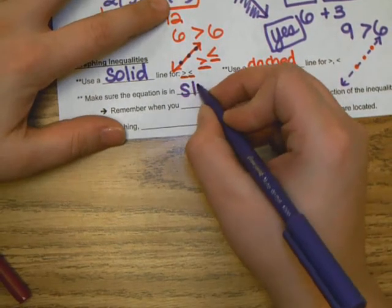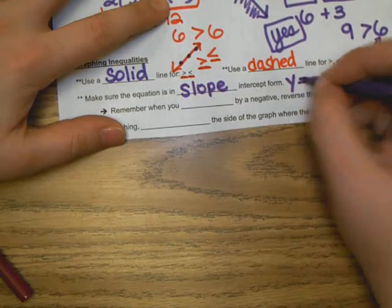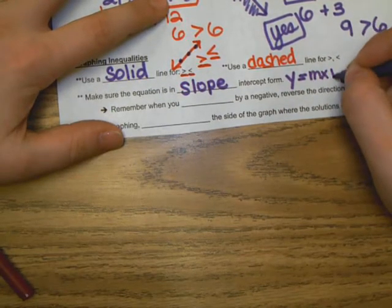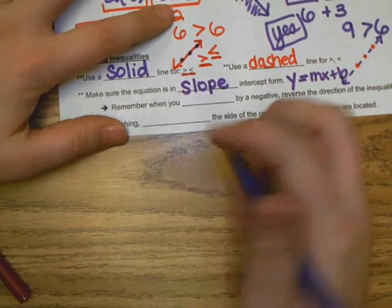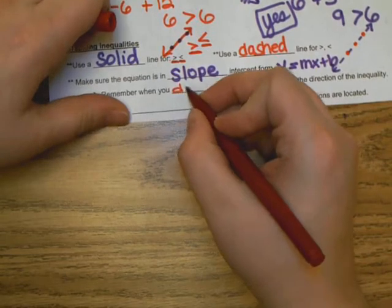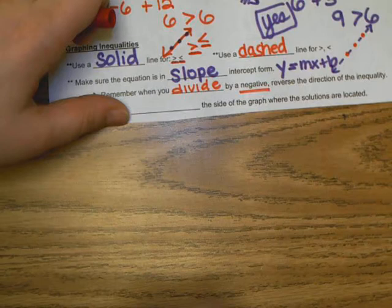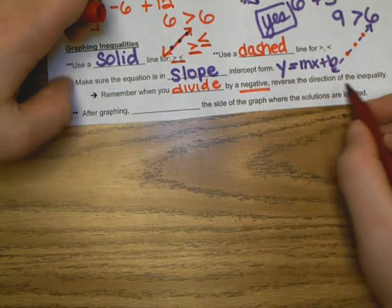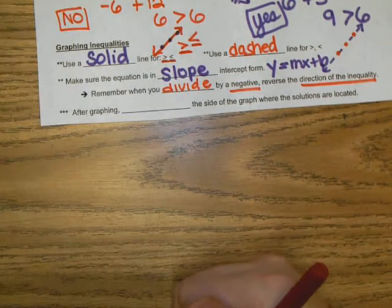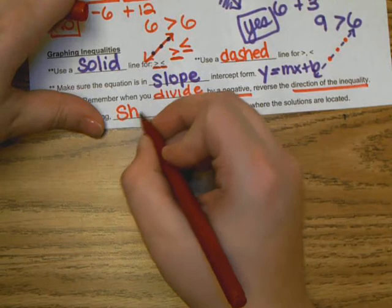When you graph, make sure your equation is in slope-intercept form — that means y is by itself: y equals mx plus b. And remember, when you divide by a negative with inequalities, you need to switch the direction of the symbol.